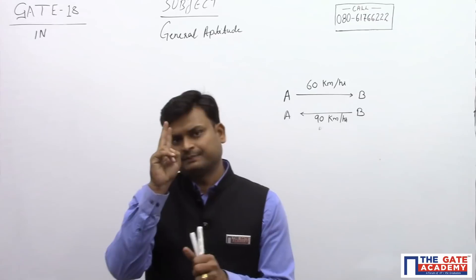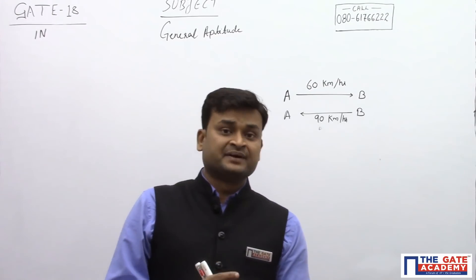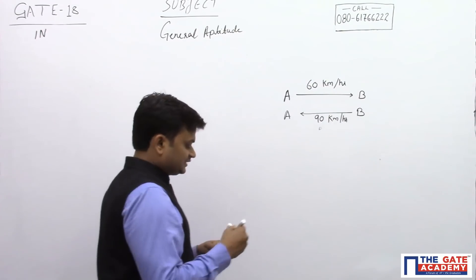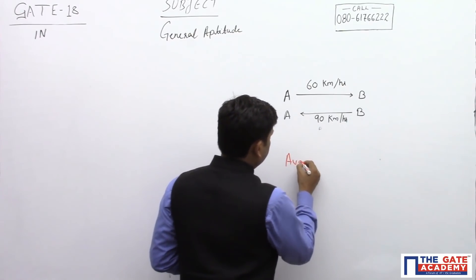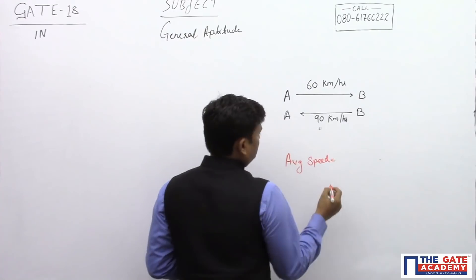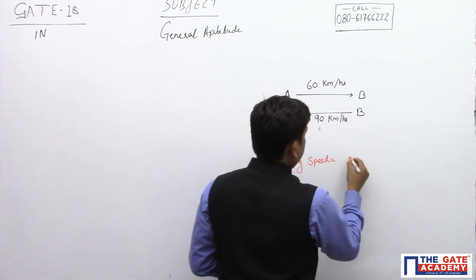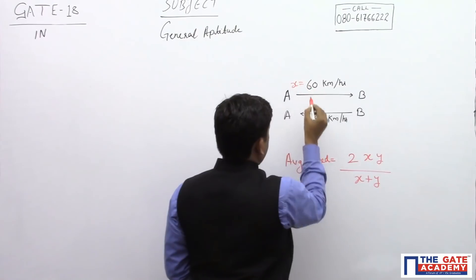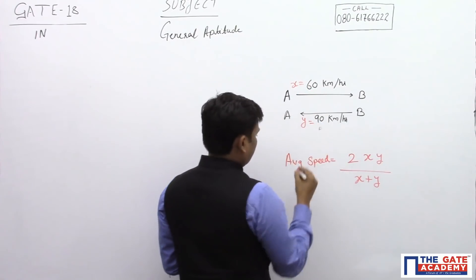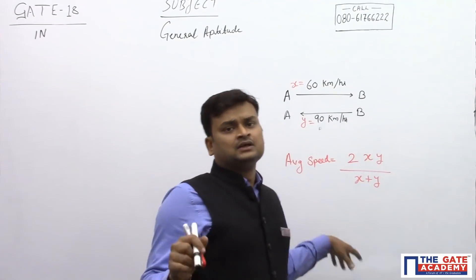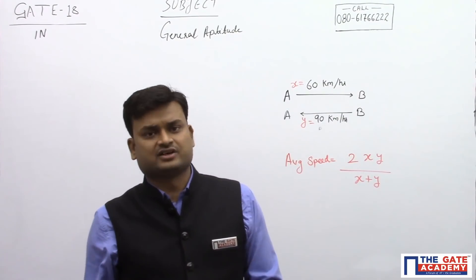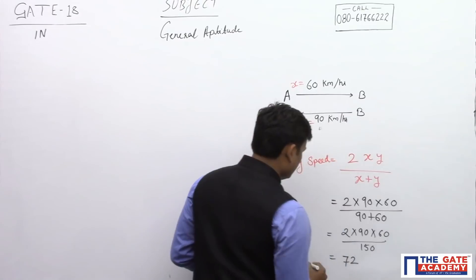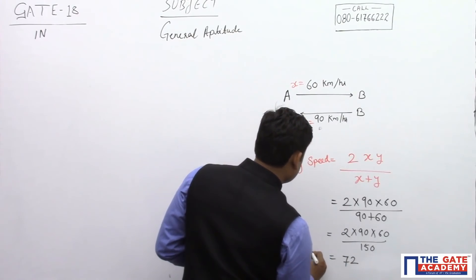I will be solving this question by two methods. If you know the formula, you can directly apply it and find the answer. The first method is to directly apply the formula for average speed: average speed equals 2xy divided by (x + y), where x is the onward speed and y is the return speed. This formula is applicable only when both distances are the same or it is a return journey. Applying it, you get the average speed as 72.